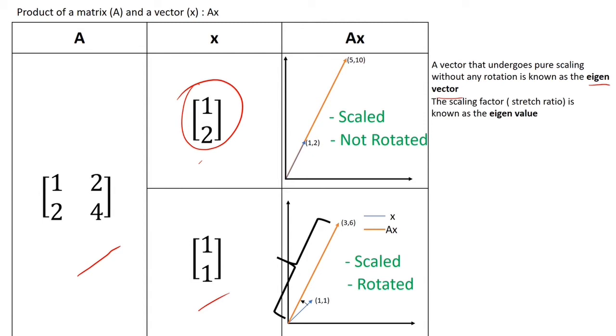And the scaling factor is known as the eigenvalue. And here, it will be 5 which means that the resultant is 5 times that of the x.